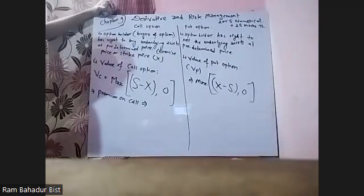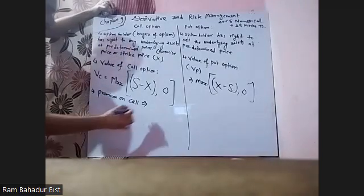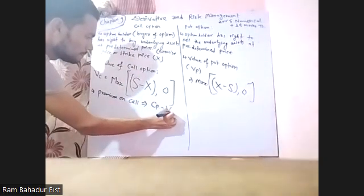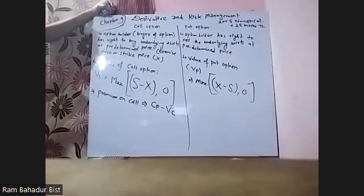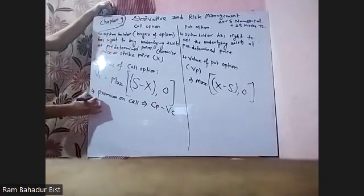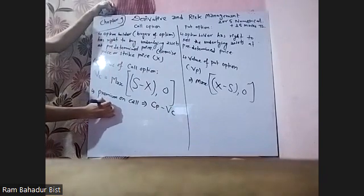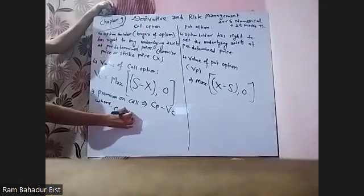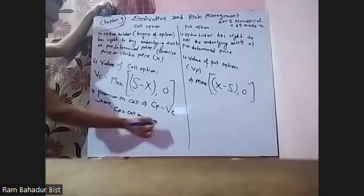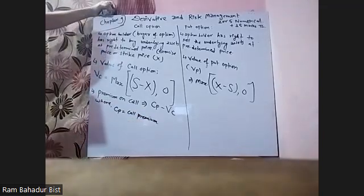So, the BC will give the CP to the BC, and the BC will give the CP to the BC. The BC will give the CP to the BC. So, the BC will give the CP. What do you mean by C.P.? What is the name of C.P.? Call.